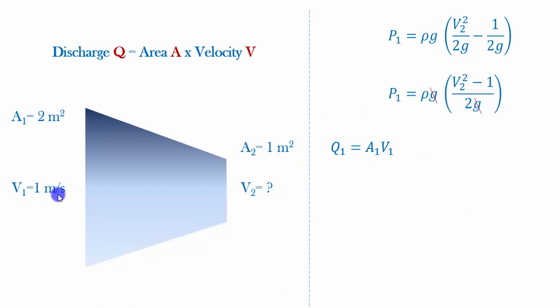It says that discharge at the inlet is equal to the product of area 1 and velocity 1. We know the velocity at the inlet is 1 and area at the inlet is 2. That will give us a discharge of 2 meter cube per second. The continuity equation says that what is getting in should get out of the system. Since q1 and q2 are the same, q2 is also 2 meter cube per second.